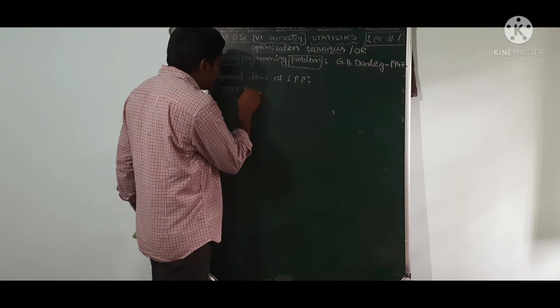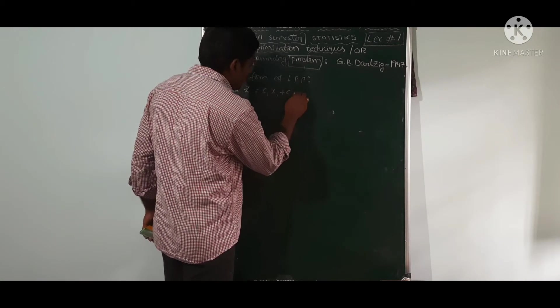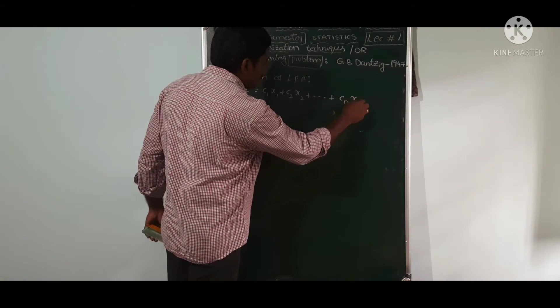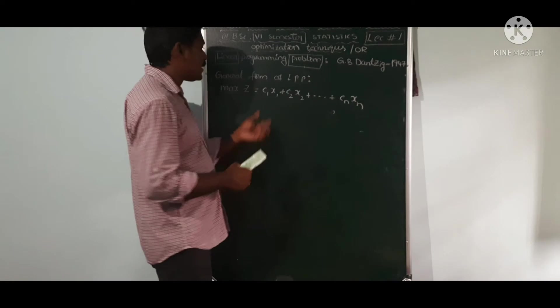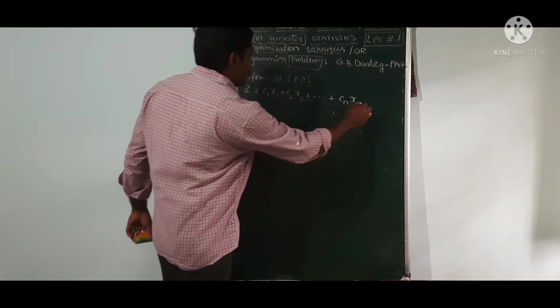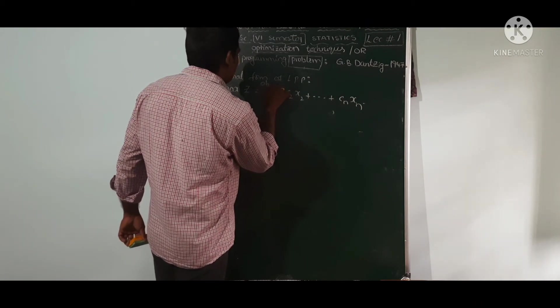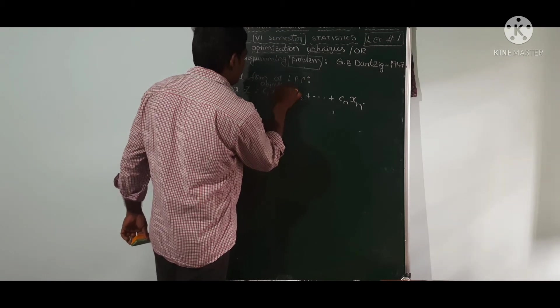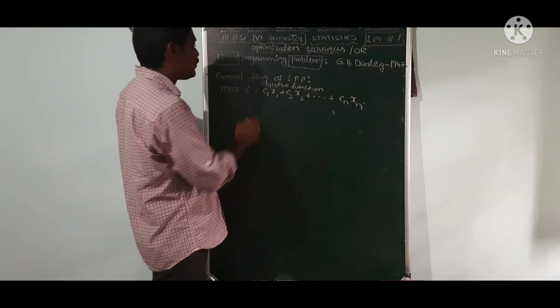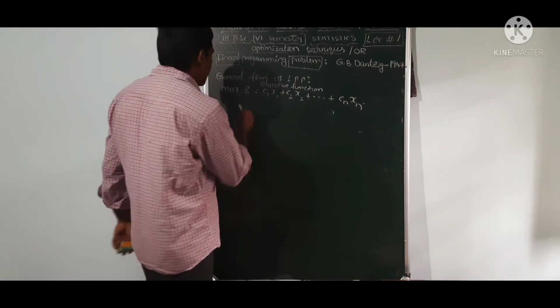Maximum profit max Z equal to C1 X1 plus C2 X2 plus and so on plus Cn Xn. The constants C1, C2, and your decision variables X1, X2. The objective function, objective function max Z equal to C1 X1 plus C2 X2 plus and so on plus Cn Xn. Subject to constraints.